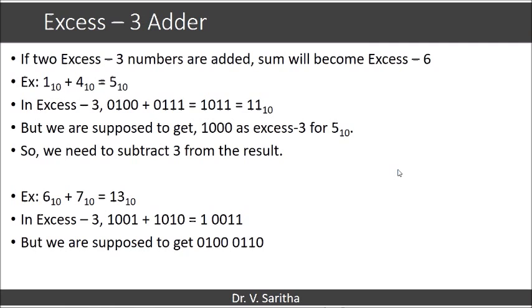Let us consider an example: 1 plus 4 equals 5. Now let us represent the same in XS3. 1 in XS3 is 4, so 0100. 4 in XS3 is 7, so 0111. And 5 in XS3 is 8, that is 1000. But when we add these 2 numbers, 1 and 4 in XS3, we are getting 1011, which is 11 in base 10.